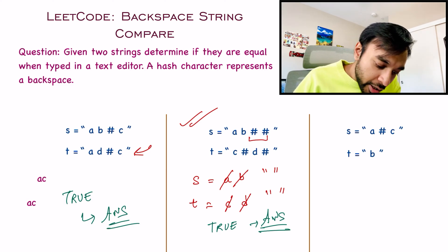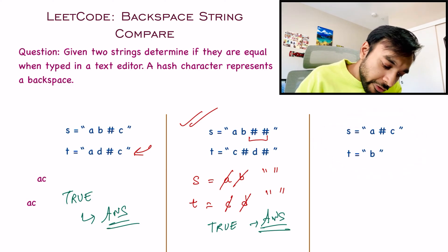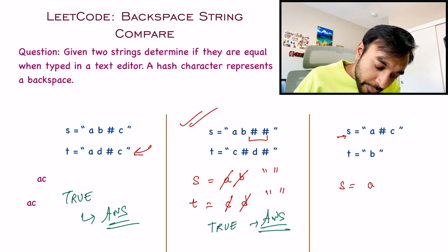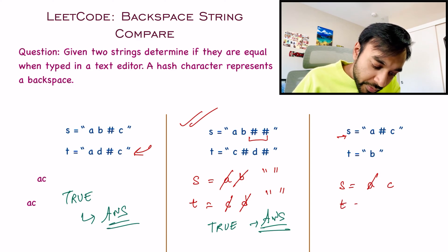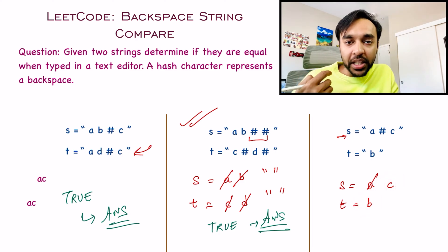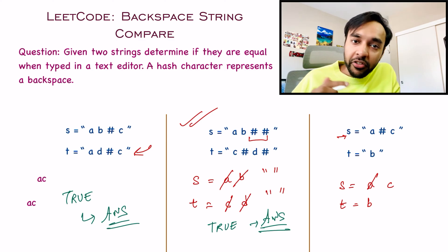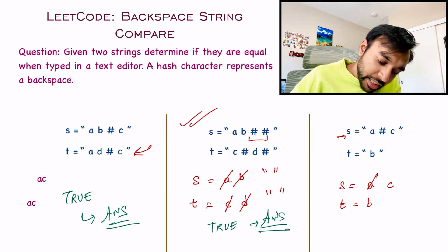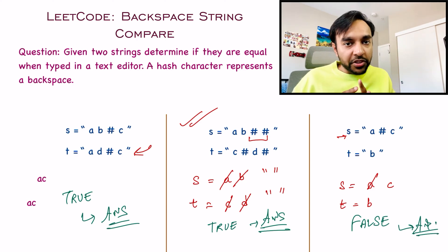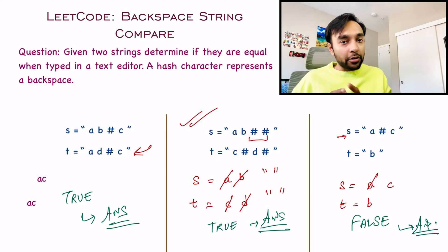Let us look at our third and final test case. The first string S translates to: A, then a backspace, then C — which gives C. The second string is B. So the first string translates to C and the second string translates to B. Both are different, so for test case number three, you need to return false. If you have understood this problem statement correctly, feel free to try it out on your own, otherwise let us dive into the solution.